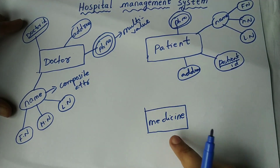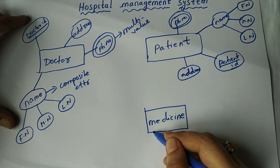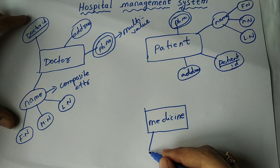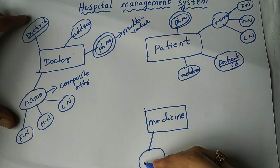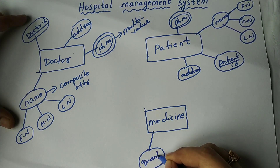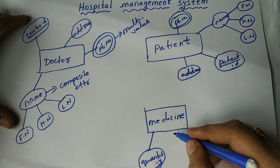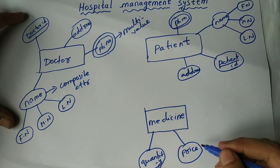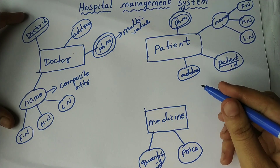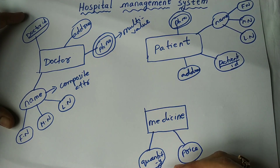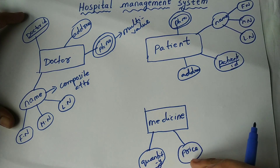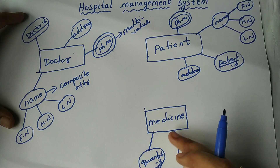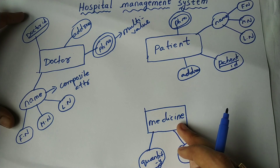For the entity Medicine, the attributes are Quantity — the quantity of the medicine — and Price, which represents the cost of the medicine the patient has bought. These two are the attributes related to the entity Medicine.